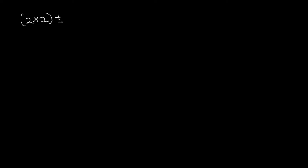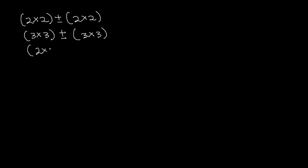For us to be able to add a matrix we need to make sure the order of the matrices are the same. We can add or subtract a 2x2 matrix to another 2x2 matrix — that is allowed. We can add a 3x3 matrix or subtract it from another 3x3 matrix. The same way we can add a 2x3 matrix or subtract it from another 2x3 matrix. Once the order of the matrices is the same, we can add or subtract them.